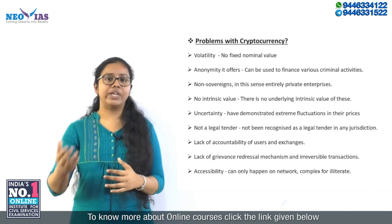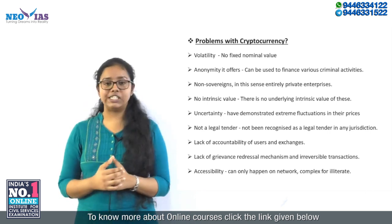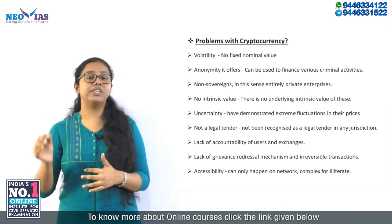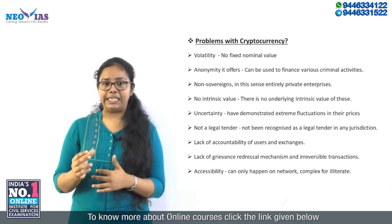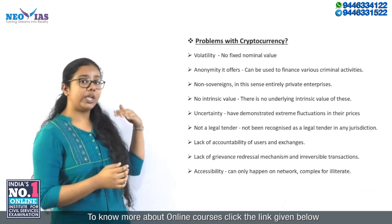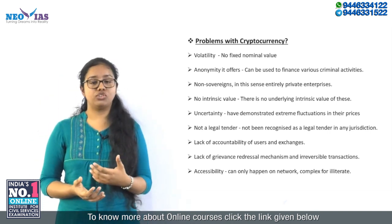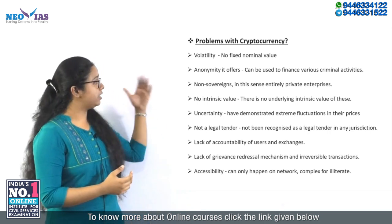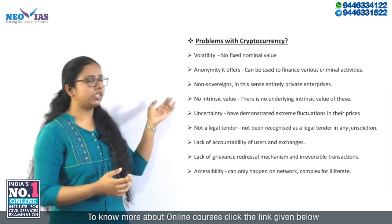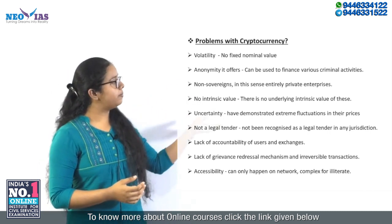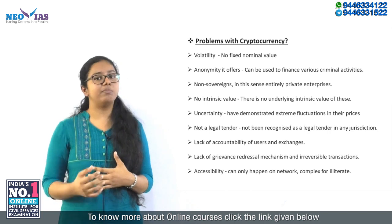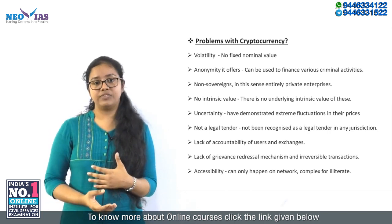Now let's see the various problems associated with cryptocurrencies. The first is volatility — the prices of cryptocurrencies are highly volatile, and because of that, investment in cryptocurrencies is highly risky. Another issue is anonymity, which can be used to finance criminal activities such as tax evasion, money laundering, and even terrorism. Then there is the non-sovereign nature — it is completely controlled by a decentralized system with no governmental control and is regulated by private enterprises only. Additionally, there is no intrinsic value to cryptocurrencies — it is neither a store of value nor a medium of exchange, and it lacks all the basic attributes of a normal currency.